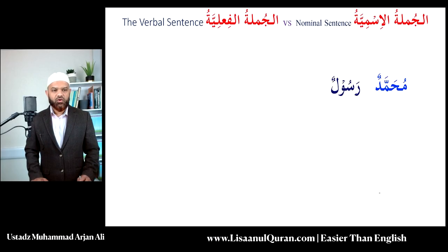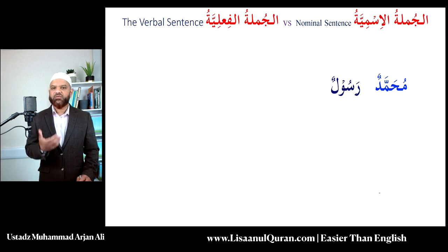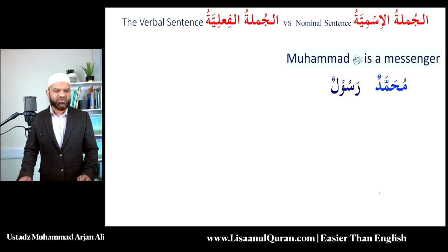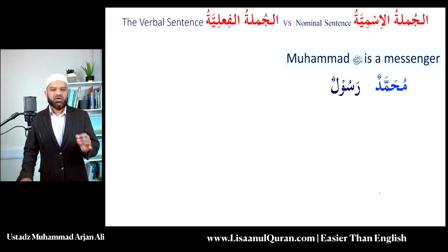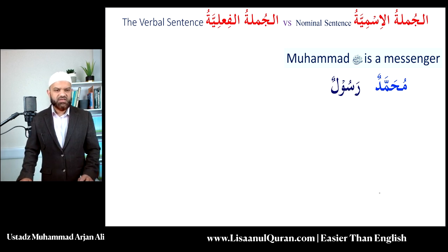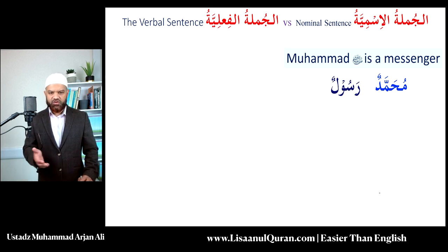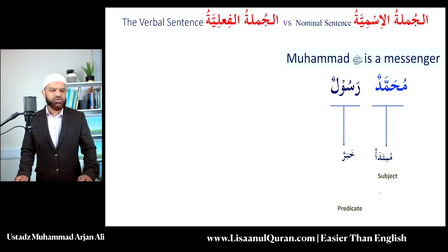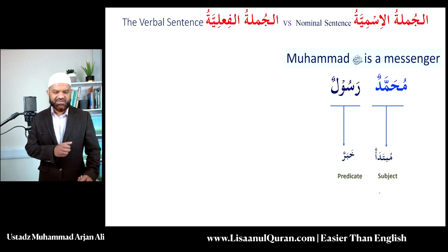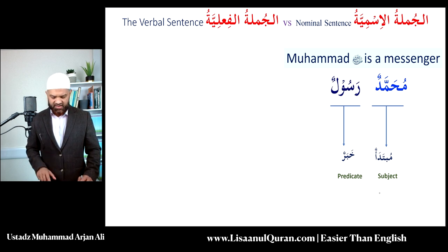Alhamdulillah, we are already familiar with the jumlah ismiyyah — most importantly, it begins with an ism and has two parts. Here we have the sentence 'Muhammadun Rasoolun' — Muhammad, peace be upon him, is a messenger — with all the components of the sentence: the mubtada', which is your subject, and the khabar, which is your predicate. In Arabic, when a sentence begins with an ism, it is called jumlah ismiyyah.